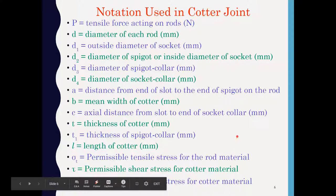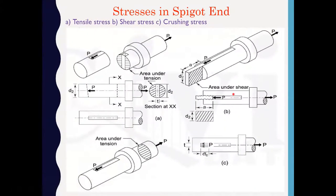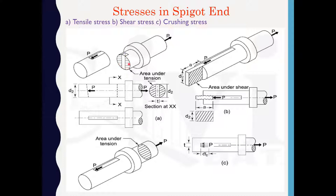Now we have to see the various failures that can occur in the spigot end. In the spigot end there may be three types of failure: tensile failure, shear failure, and crushing stress. We have to avoid these failures by keeping proper dimensions of the spigot end. The tensile failure may occur at the slot because at the slot there is the weakest area of the spigot.